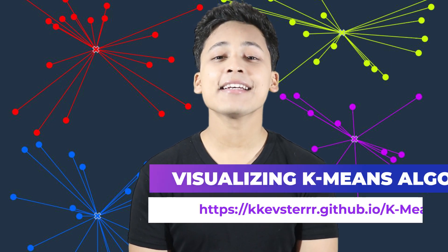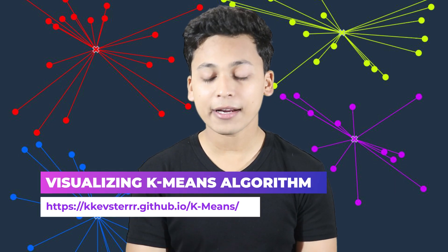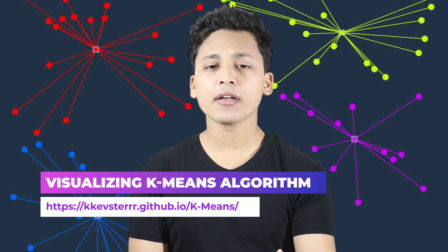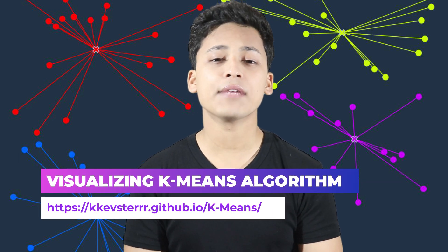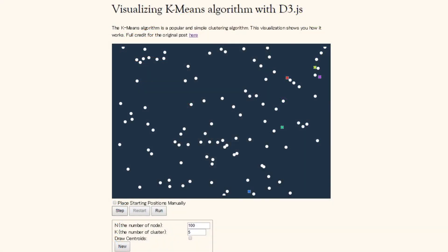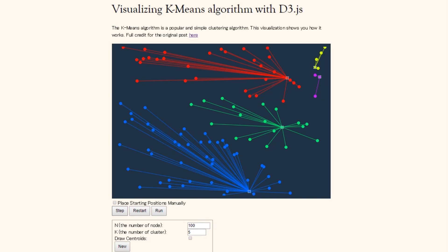The third one is visualizing k-means algorithm with d3.js. Now if you're learning k-means algorithms or even if you're teaching someone or giving a session to any third person or you're in a conference and you want to actually explain how k-means algorithm actually works, consider visiting this website.